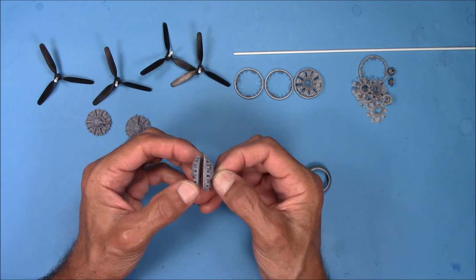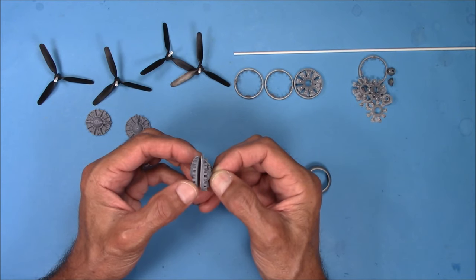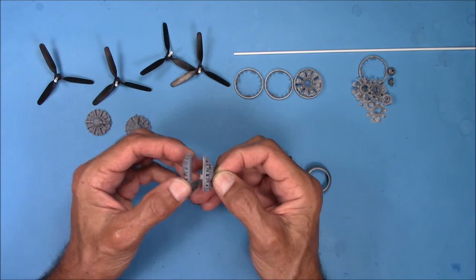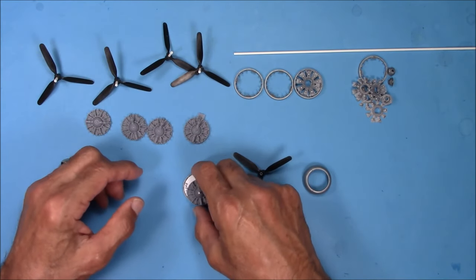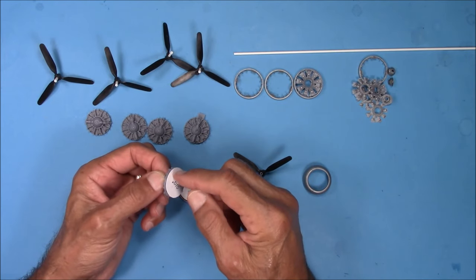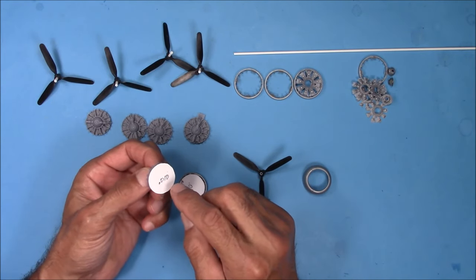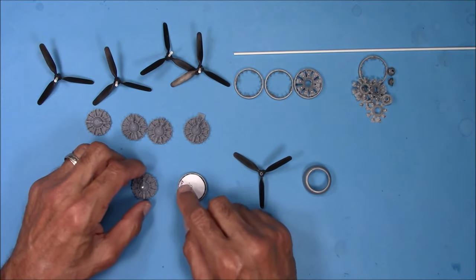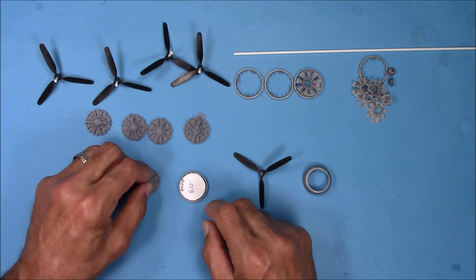I always wet sand resin because the dust is a lung irritant, so you always want to wet sand these things. So with that, the other thing I did was after I wet sanded it down, I put a 0.010 inch disc on the back of this and super glued it. I just super glued it onto a piece of plastic and then just cut it out.